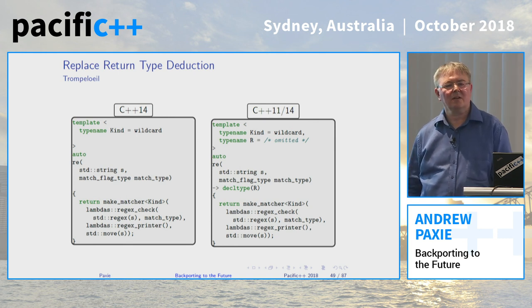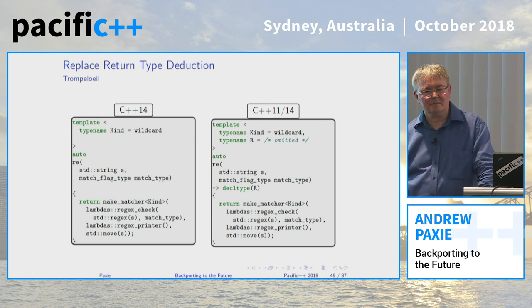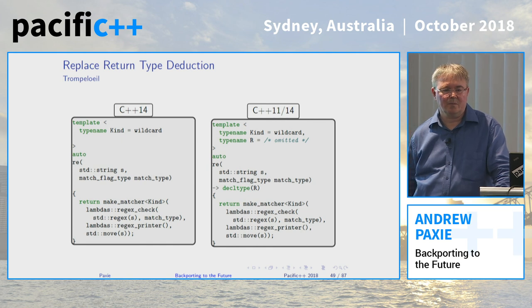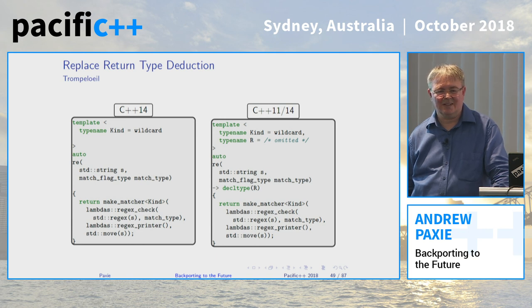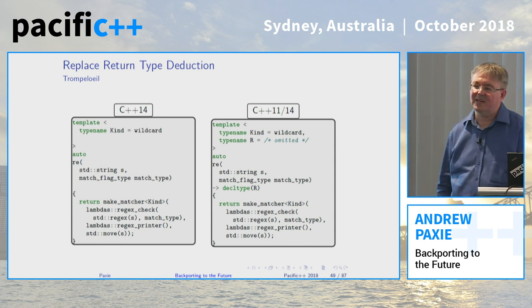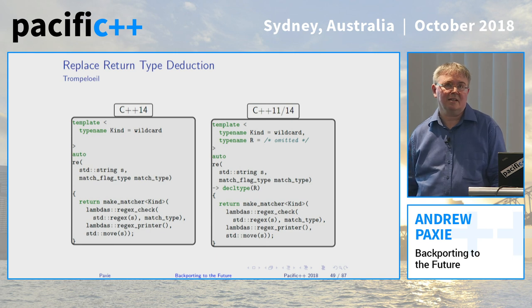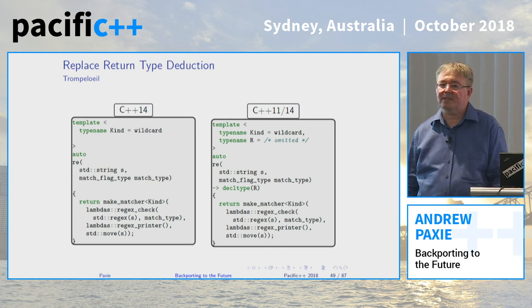Q: Are your contributions now part of the trunk or the ongoing development of this library, or are they applied to a release branch specific to C++11 compatibility? A: The question is, is this code on master? And the answer is yes — this was merged back in three releases ago, around March 2018. So this is reflected in the main code base now.